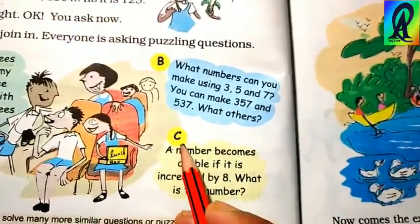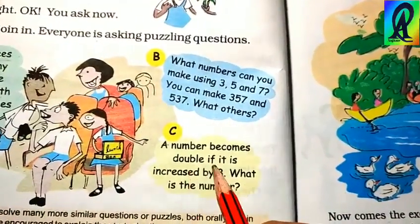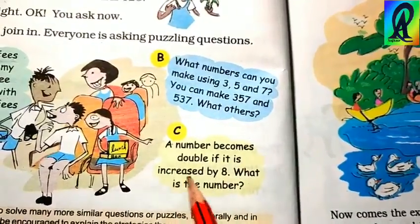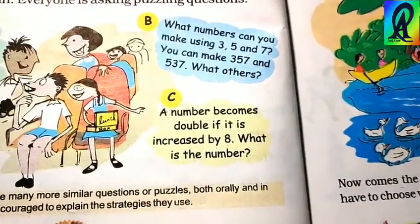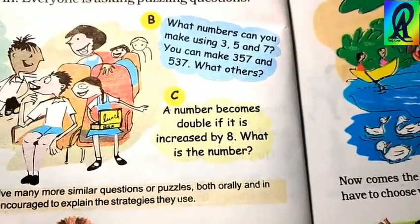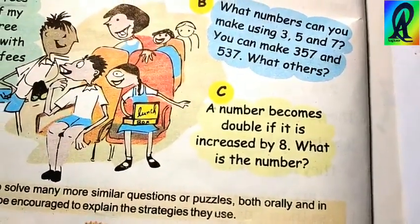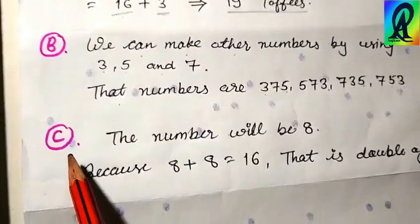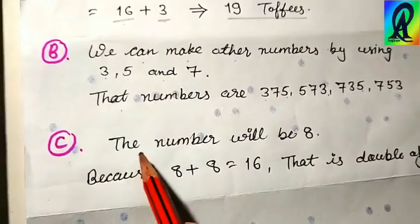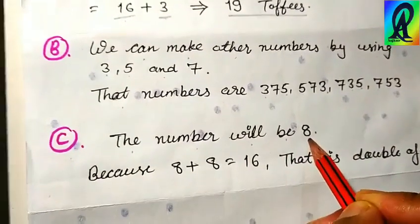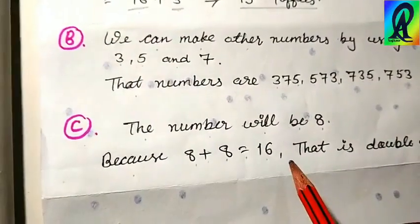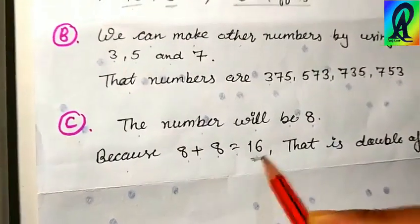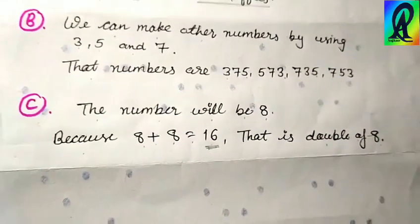Puzzle C: A number becomes double if it is increased by 8. What is the number? The answer of puzzle C is 8, because 8 + 8 = 16, which is double of 8. So the answer is 8.